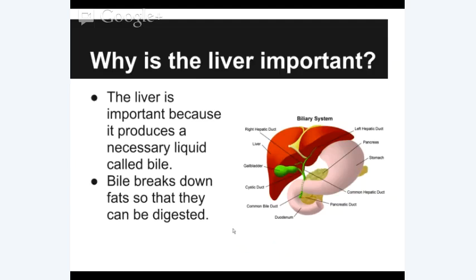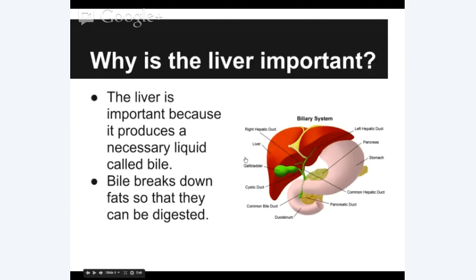The liver is an incredibly important organ. Looking at the bile system, the liver produces something called bile. That bile can be stored in the gallbladder, and it is secreted into the small intestine via the common bile duct. When it gets into the small intestine, it aids in the digestion of fats, breaking down large fatty products into basic lipid structures so that our body can process, store, or extract energy from those fats. That is one of the major functions of the liver.